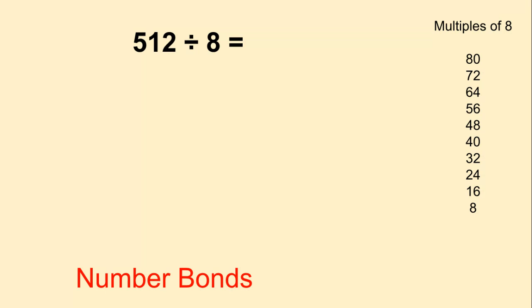Oh, well, wait a minute. 48 is a multiple of 8, right? Because 8 times 6 equals 48. So if 8 times 6 is 48, then 8 times 60 must be 480.